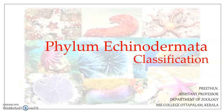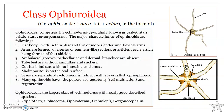Welcome back to the study on the diversity of phylum Echinodermata. We are continuing the classification and in this presentation we'll be looking into the echinoderm class Ophiuroidea. Ophiuroidea is considered to be the largest class of echinoderms with nearly 2000 described species. They are characterized by a wide variety of cryptic lifestyles and for this reason they are not much conspicuous. They inhabit almost all types of benthic marine habitats from intertidal zones to a depth of nearly 6000 meters.